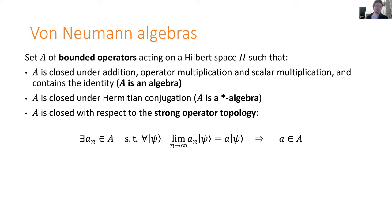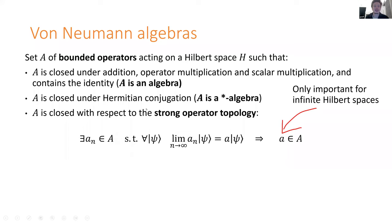There's a slightly weirder condition: the algebra should be closed with respect to the so-called strong operator topology. This means that if I take some limit of a sequence of operators that are all in the algebra, then the limit should also be in the algebra. With operators on infinite dimensional Hilbert spaces, you have to be slightly careful about what you mean by a limit. Specifically, we mean that the sequence a_n converges to a if, for any fixed state psi, a_n of psi converges to a of psi. This is different from the norm topology where the norm of (a_n minus a) has to tend to zero. This is really the natural topology from the physics point of view, because it captures the sense in which a_n approximates a for the purpose of any reasonable set of measurements.